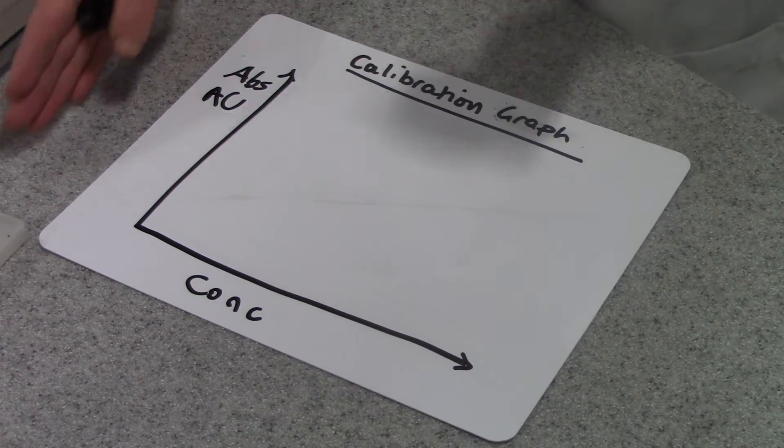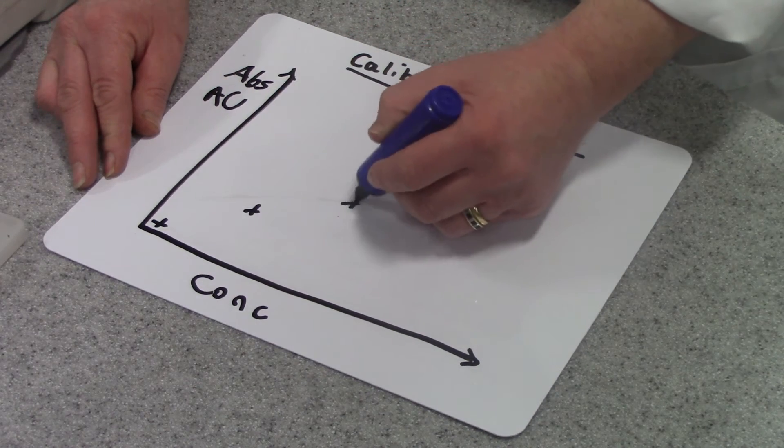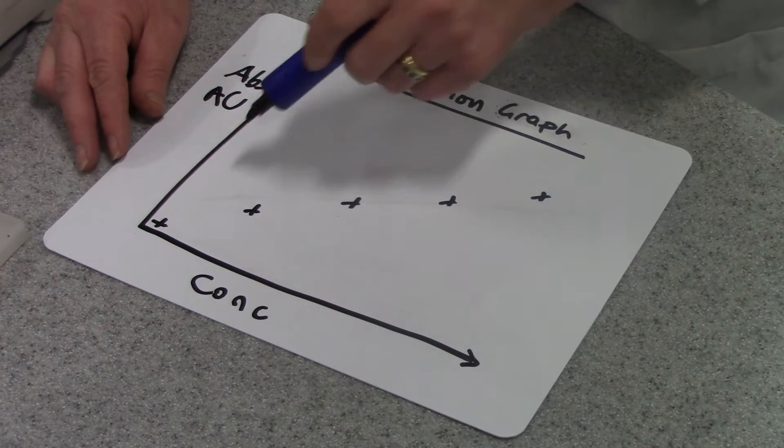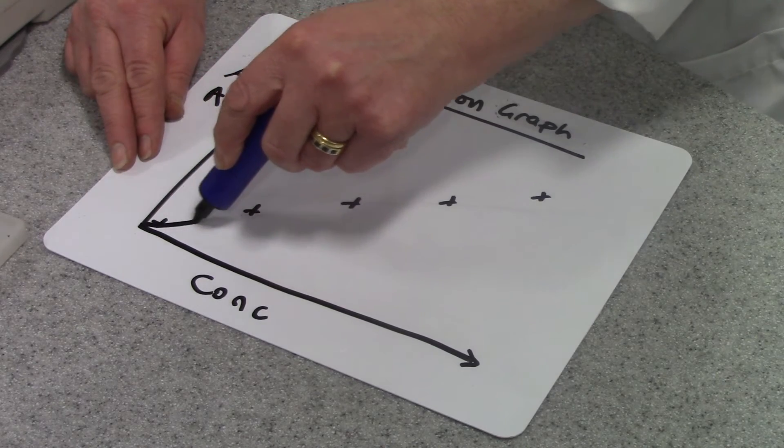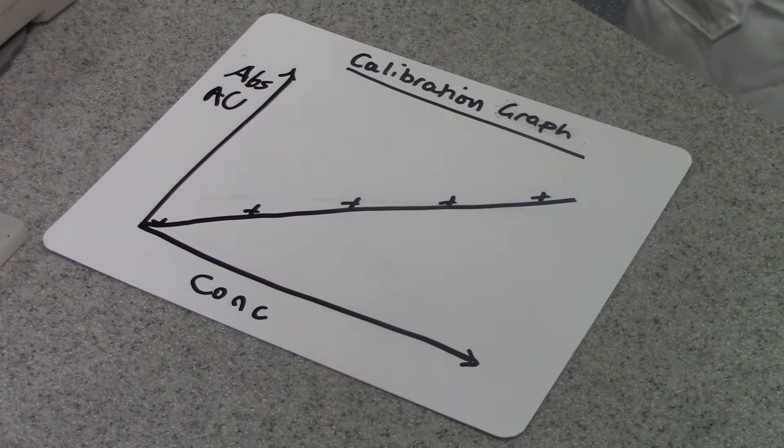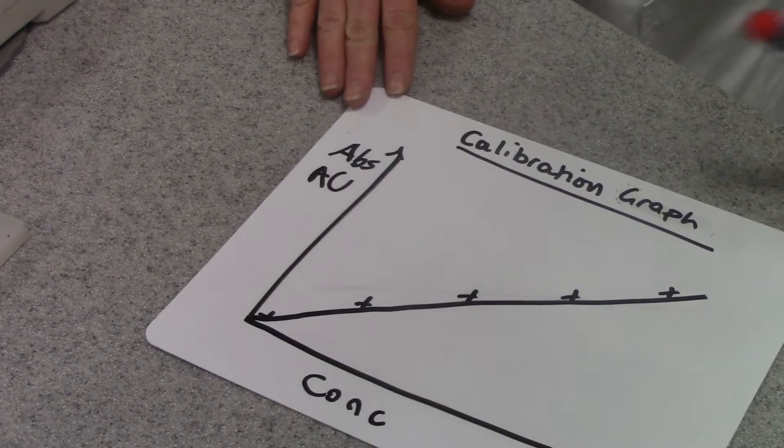As my concentration increases, the absorbance of light increases so I can plot those values. And because they're directly proportional, I should be able to draw a nice straight line with a ruler through them. This is my calibration graph.